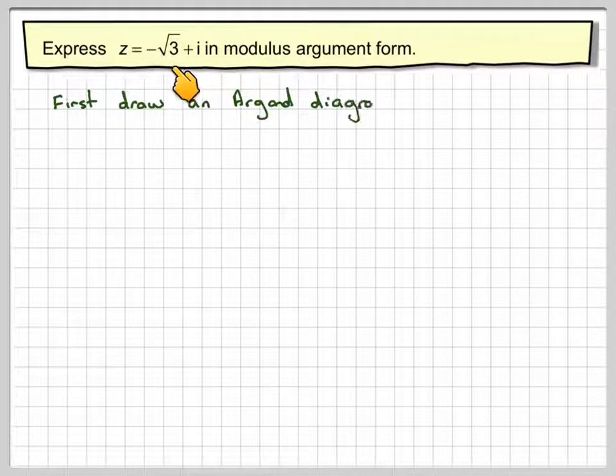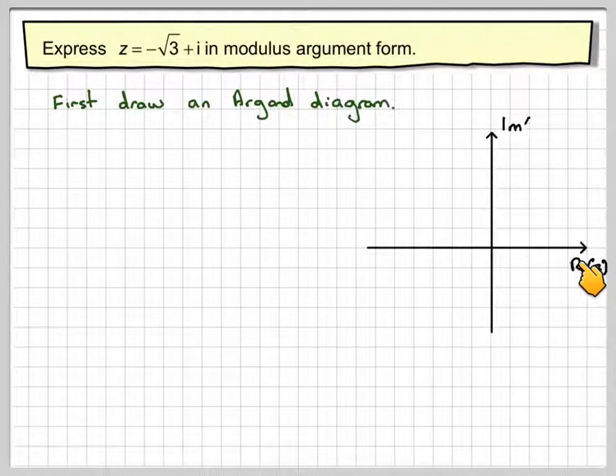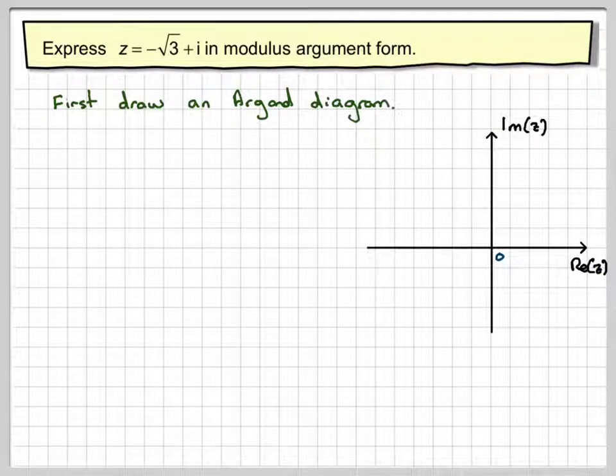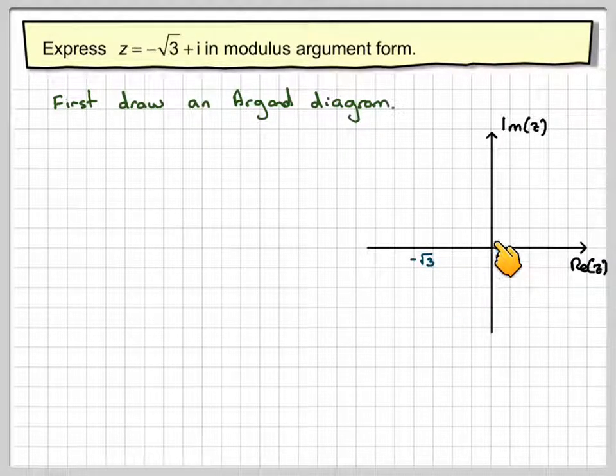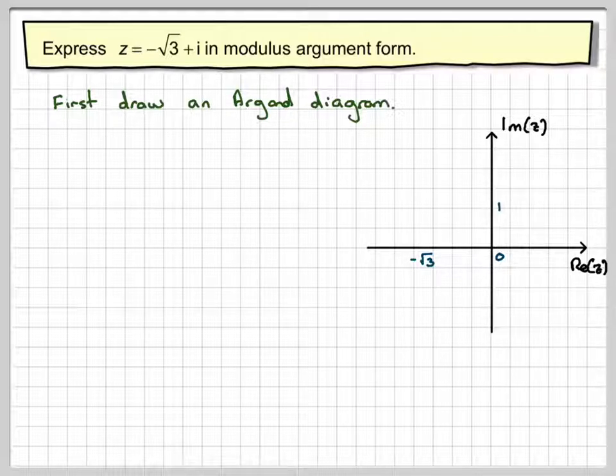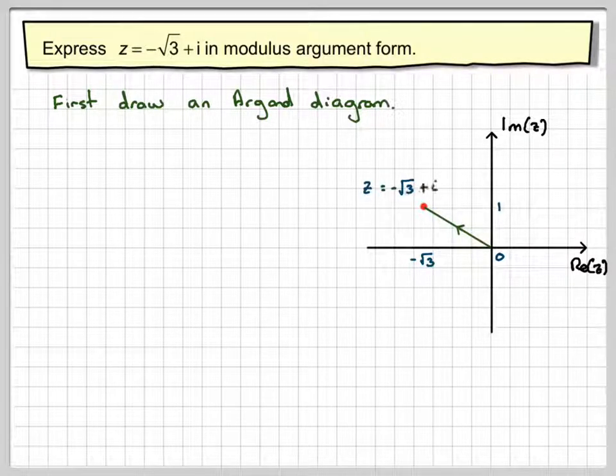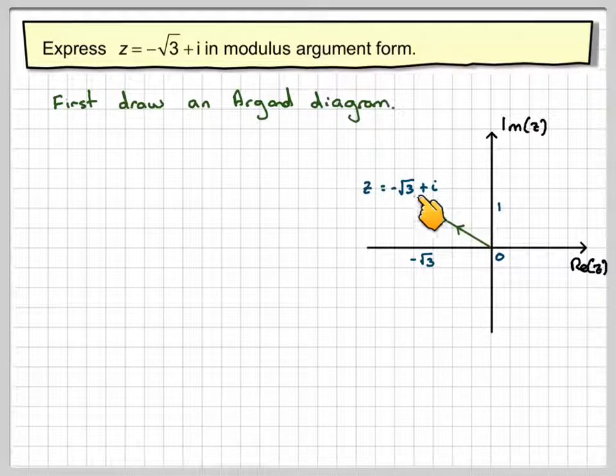First of all, with this type of question, it's always advisable to draw an Argand diagram. So the real z, imaginary z, we want minus root 3, so it's minus root 3 and then plus 1i. So it's going to be about there, so we draw a dot, we'll align with it, and label the complex number minus root 3 plus i.